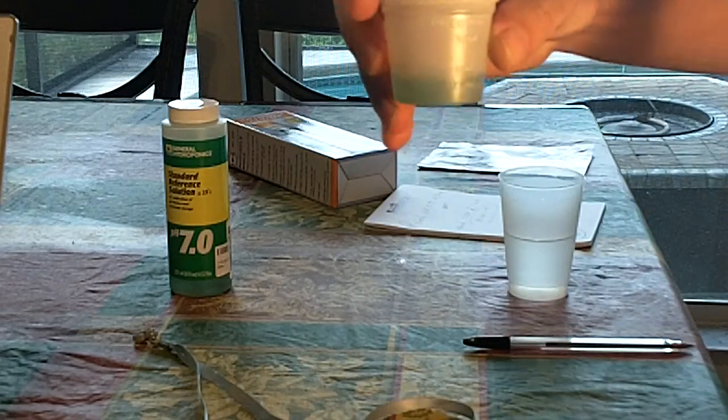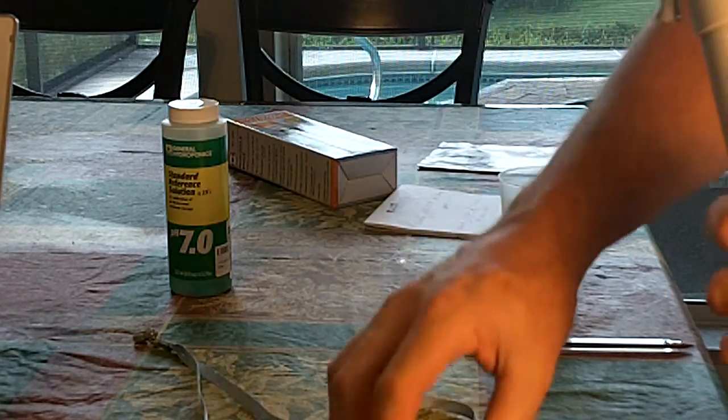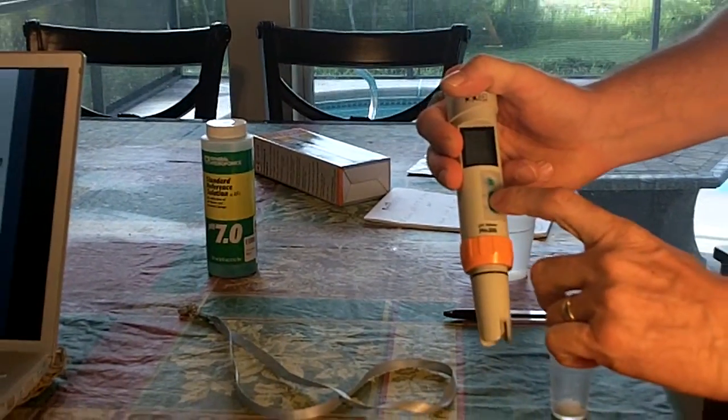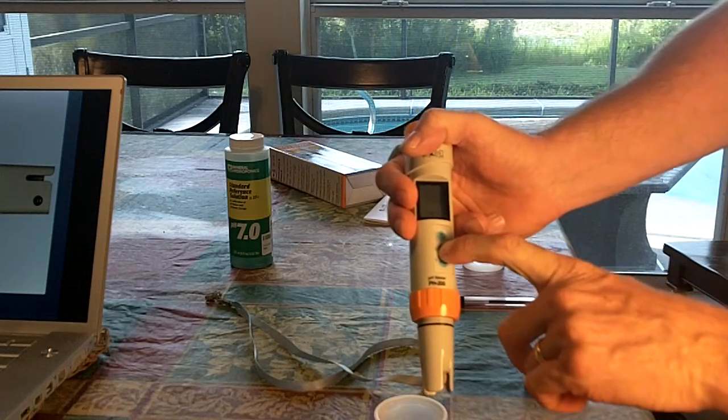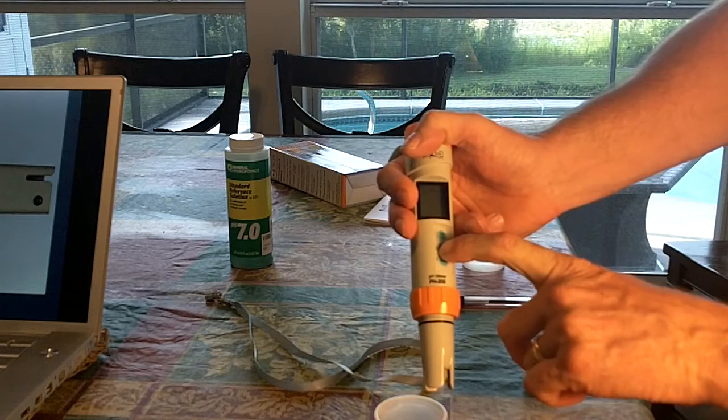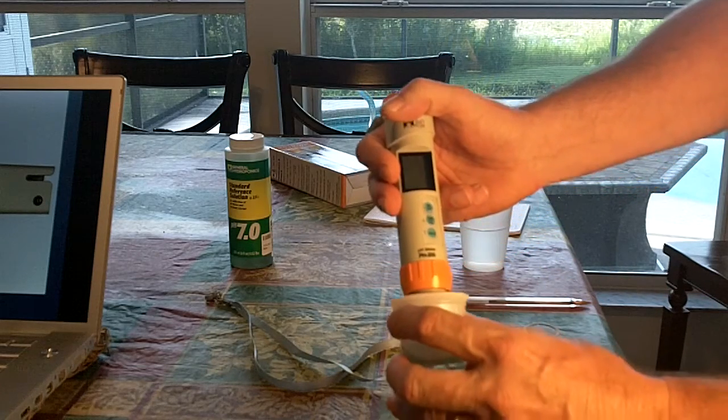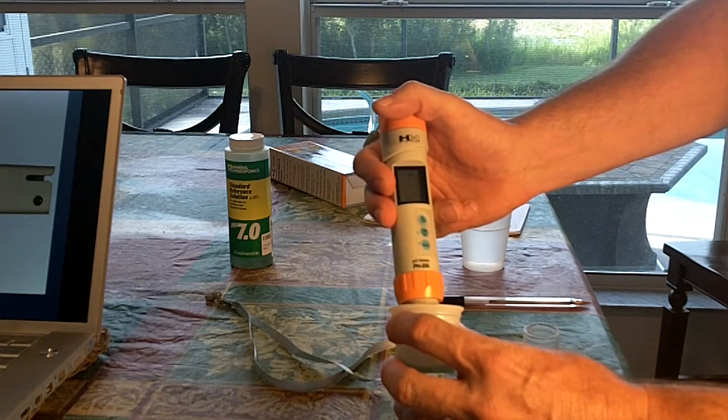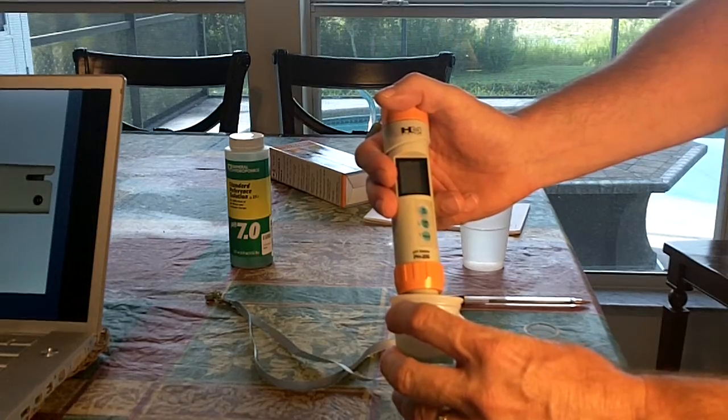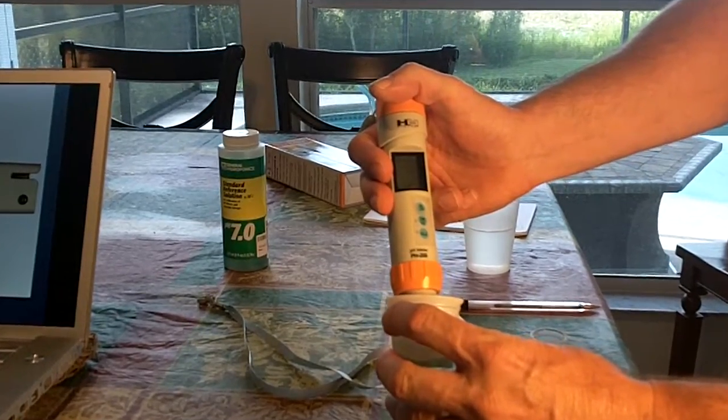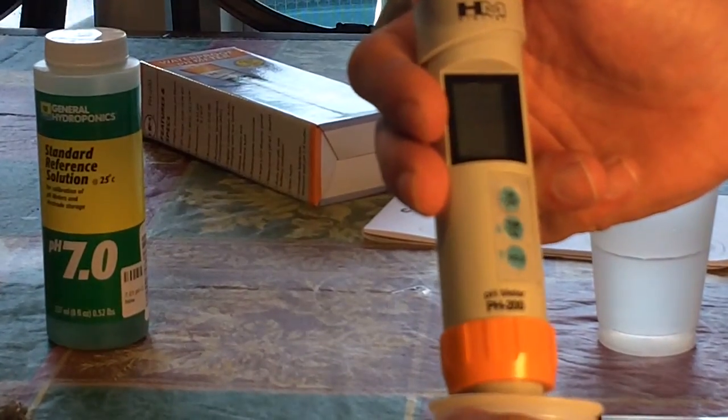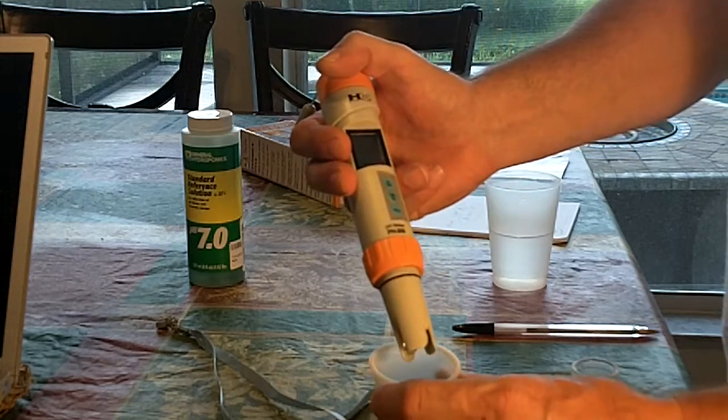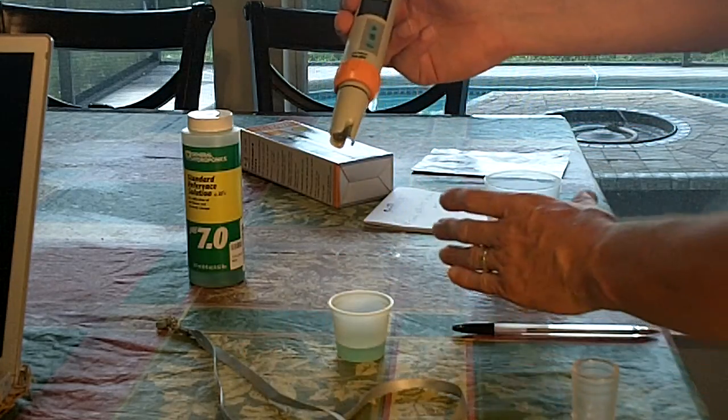I already went ahead and poured this in, this is just like a little medicine cup. What we want to do is hold the calibrate button until it shows up on the screen and it'll start flashing CAL. We have that in our solution, we just stick it in our solution and it's going to sit there and flash for probably about five to ten seconds with the CAL. Then it's reading seven point zero zero right now and then it starts flashing END. There you go, we went ahead and calibrated it to our seven point zero zero.